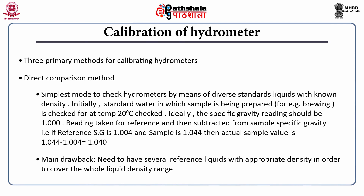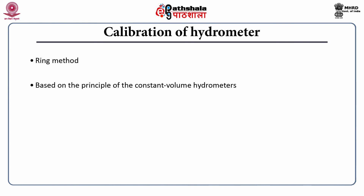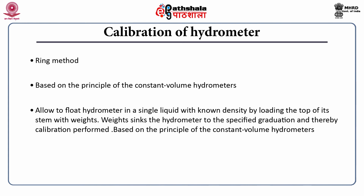The main drawback of the direct comparison method is that you need to have specific reference liquids with the appropriate density to cover the whole liquid density range — sometimes just taking water does not suffice. The second method is the ring method, which works on the principle of constant volume hydrometers. The hydrometer is allowed to float in a single liquid with known density by loading the top of its stem with rings as weights. You continuously add weights onto the stem and observe the change in graduation, thereby performing calibration.